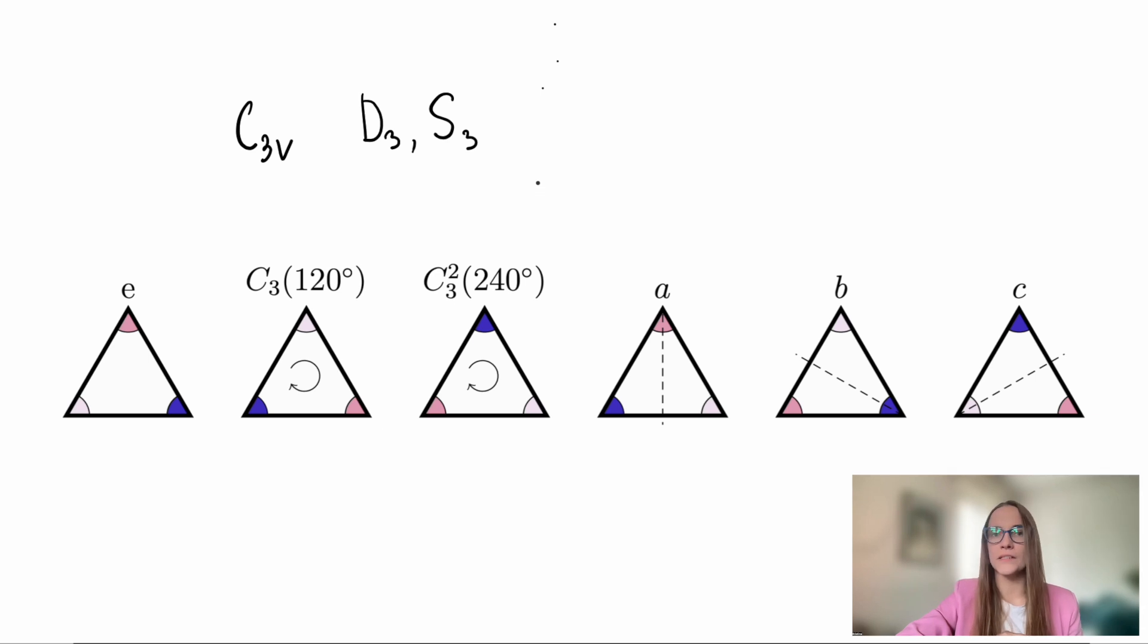An element of the group is an operation that maps the triangle onto itself, although it may change its coloring. There are six elements in this group. The identity element means that we do nothing to the triangle, we leave it as it is.